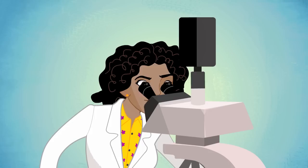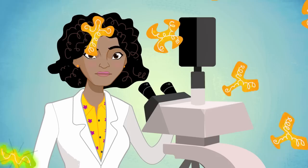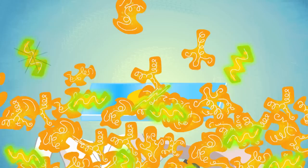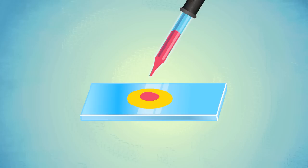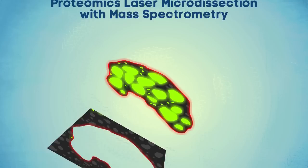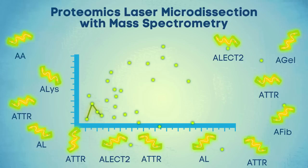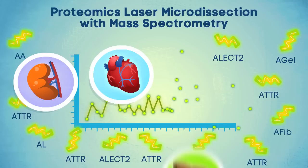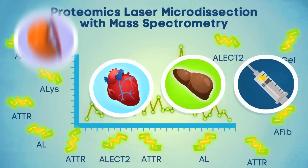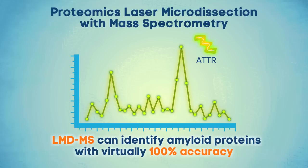Proving that amyloid is present in an organ is only the beginning of the process. Next, the type of amyloid causing the disease must be determined in order to plan for an appropriate individualized treatment. Recent advances in the field of proteomics promise to revolutionize the precise diagnosis of amyloidosis. Laser microdissection of Congo red positive samples, followed by mass spectrometry, is the premier technique in typing amyloidosis. LMD-MS can be performed on any tissue sample, including a fat pad aspirate, if amyloid is present. Studies have shown that LMD-MS can identify all known amyloid proteins with virtually 100% accuracy, as well as characterize new ones.